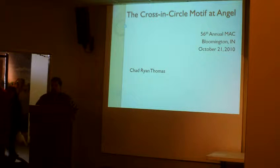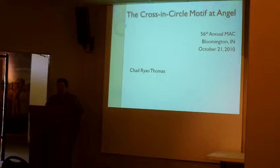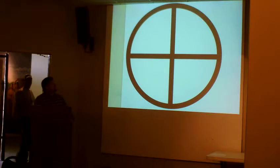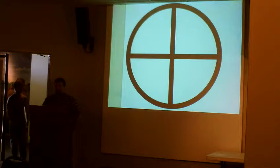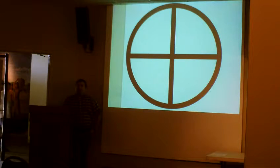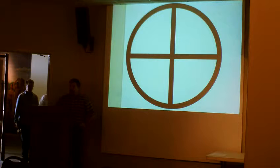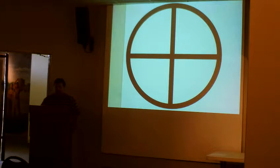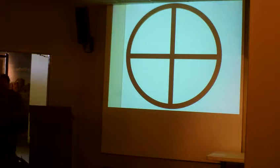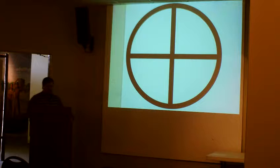Anyone familiar with Native American art, whether historic or prehistoric, should be familiar with the cross-and-circle motif. It's a very simple geometric design — at least the core idea is very simple and geometric. It was made across very large swaths of North America for thousands of years, both before and after the people settled here at Angel Mounds, and it was probably made by very widely different cultural groups, for different reasons, with different meanings, throughout that very long span of time.